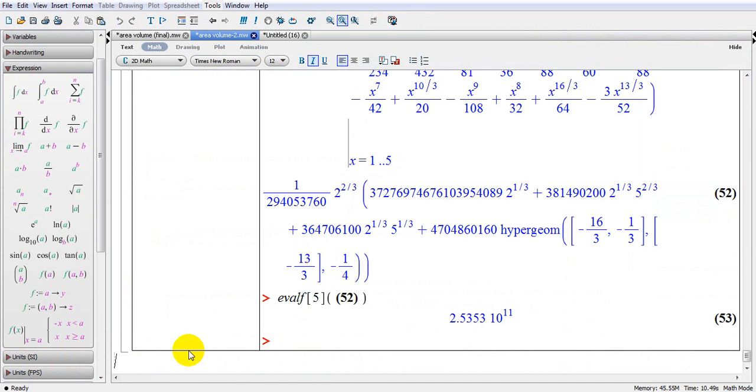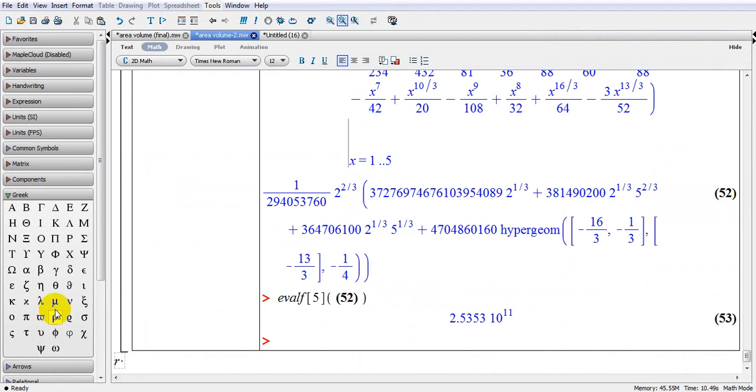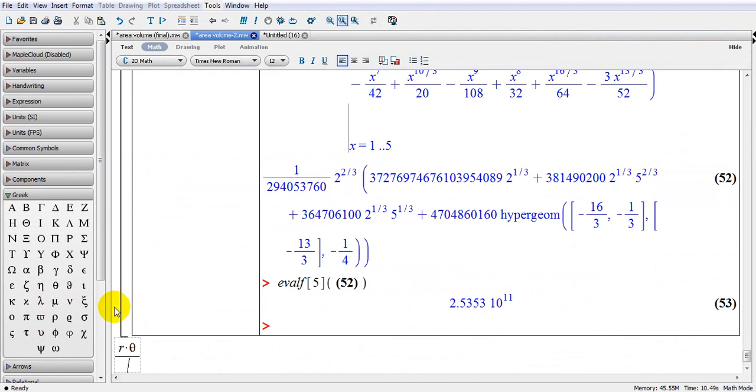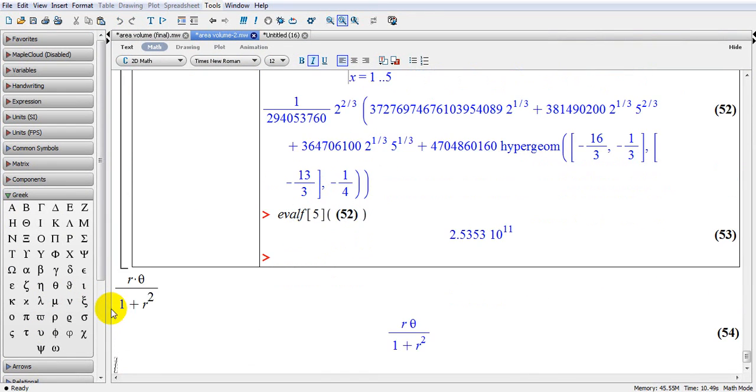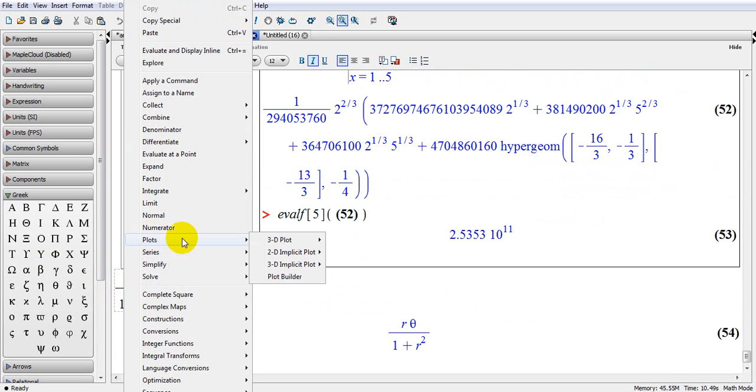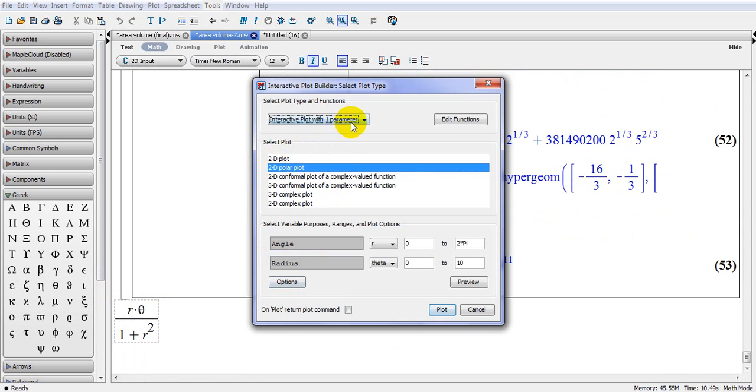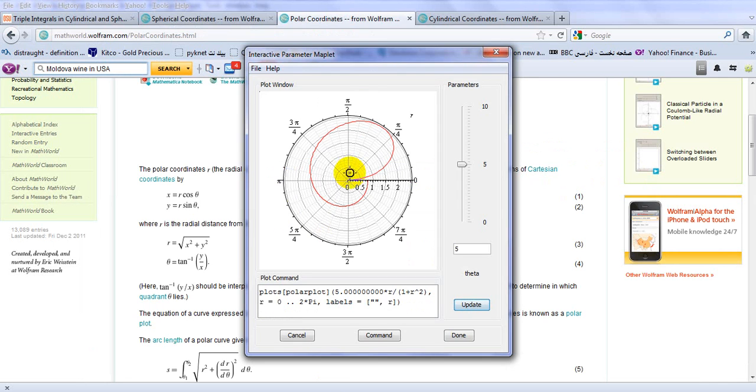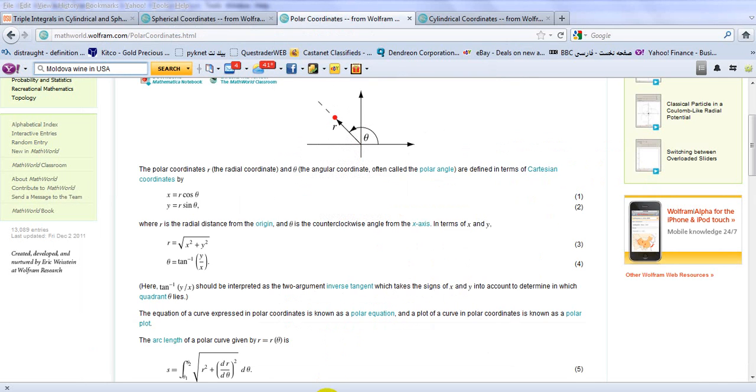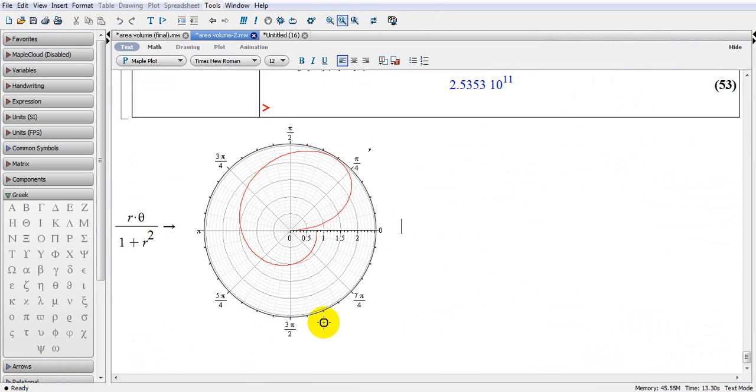Obviously if you want to convert it to Cartesian 2D, X is equal to r cosine theta and Y is r sine theta. Let's go back here and have a simple polar function: r multiplied by theta divided by 1 plus r square. This is my function. Let's simply plot that function, see how it looks like. I go here to plot builder in the interactive plot.